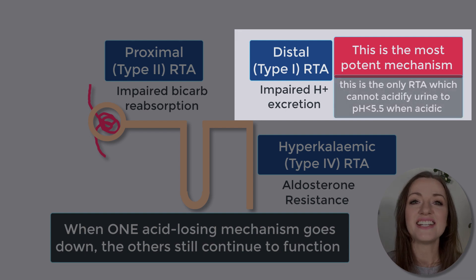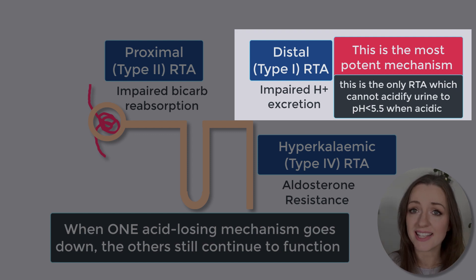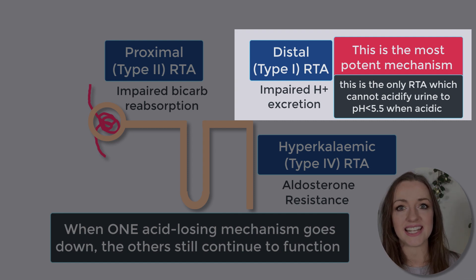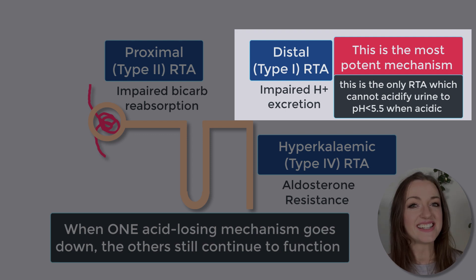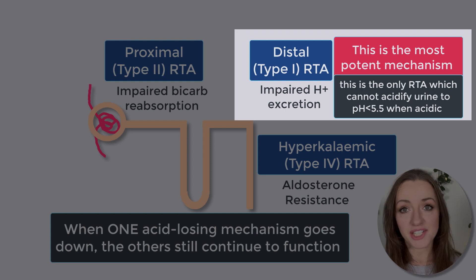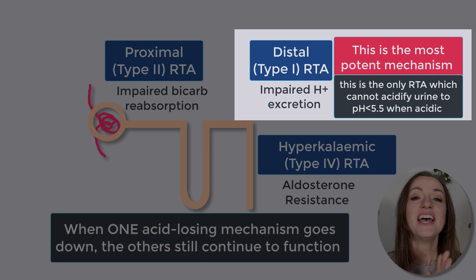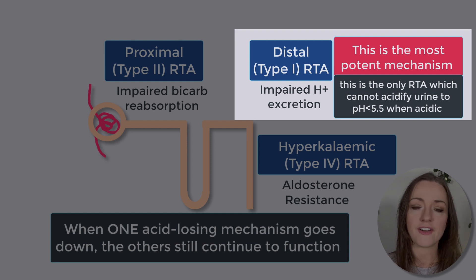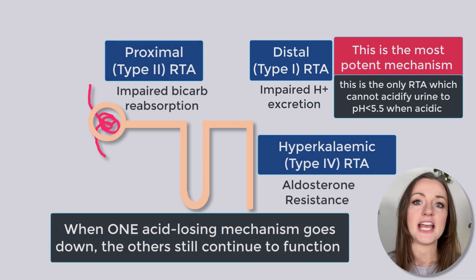Lock that in. With type 1 RTA, even in acidic conditions, that person is going to have real trouble putting acid into their urine — even when they really need to. Normally, when someone is acidic, they secrete hydrogen ions into the urine and reduce the urine pH to less than 5.5 — that's the magic number of peak urine acidity. With distal RTA, even when that person is acidic, you cannot acidify the urine below a pH of 5.5.